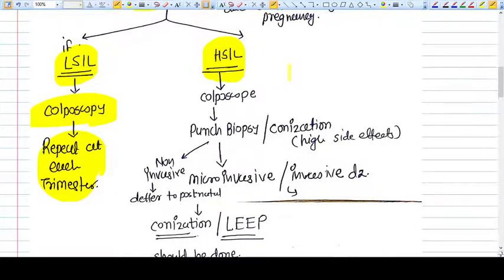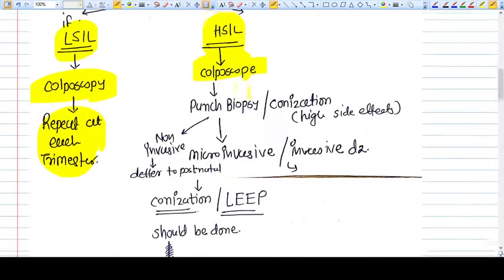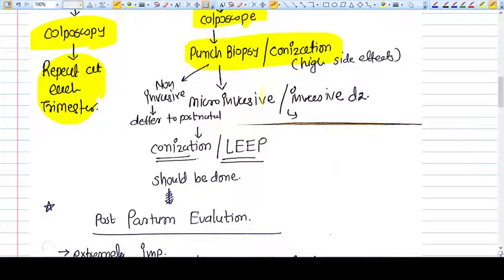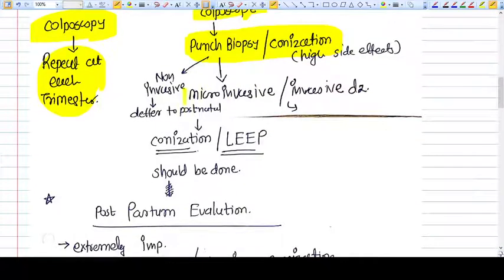If the lesion is high grade (HSIL), you do colposcopy and punch biopsy. Punch biopsy is always better than conization because conization is associated with more abnormalities and problems like bleeding and preterm deliveries.